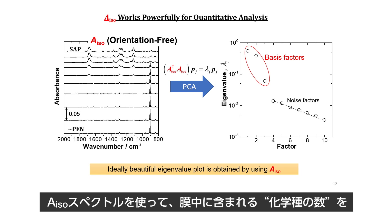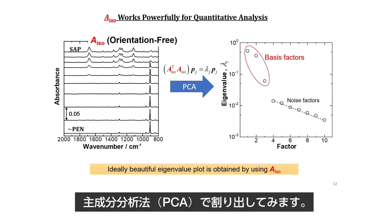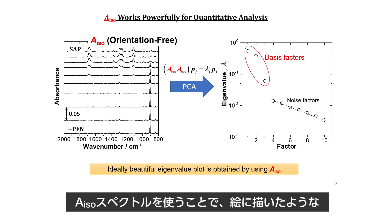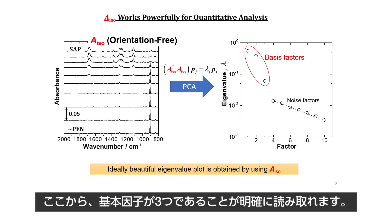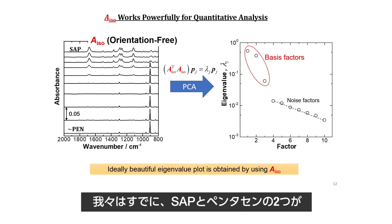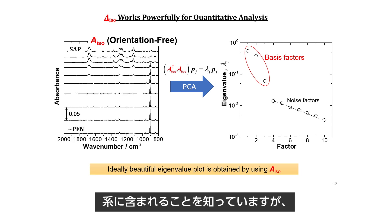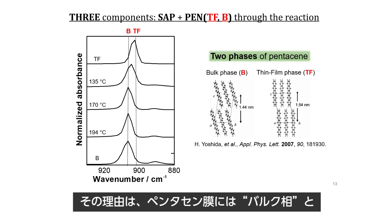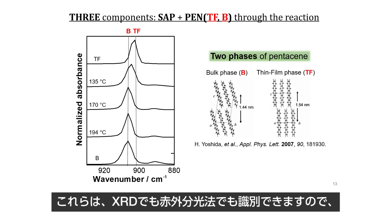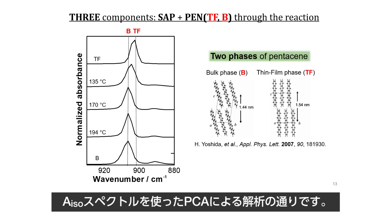The number of constituents involved in this film is analyzed by principal component analysis, PCA, on the isotropic spectra. An ideally beautiful eigenvalue plot is obtained by using the A-ISO spectra, which is a great benefit of using MERS. The eigenvalue plot apparently implies that three components constitute the basis factors. We know that two components — SAP and pentacene — are involved in the system. The reason there are three is that the pentacene film has two different phases: the bulk and thin film phases, which can be discriminated by both X-ray diffraction and infrared spectroscopy. As a result, we have three constituents in the system as revealed by PCA analysis using the A-ISO spectra.